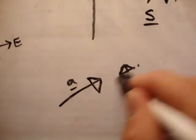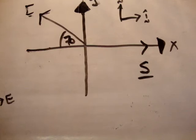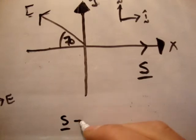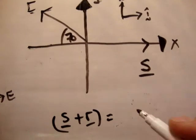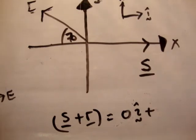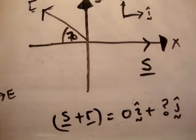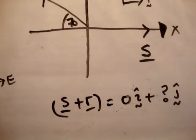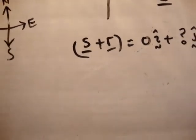So what we're given is that the vector r plus s has no i-hat component. So s plus r has no i-hat component, meaning it is equal to zero i-hat plus some unknown j-hat. So what is s plus r? We'll go and add s plus r.